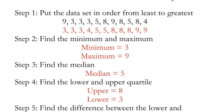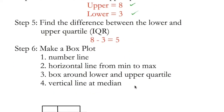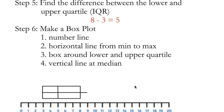Step one: hopefully you put the data set in order. We have 3, 3, 3, 4, 5, 5, 8, 8, 8, 9, 9 — there should be 11 numbers. Minimum and maximum: we have three and nine. The median is the one in the middle — it's five. Upper and lower quartiles are eight and three. The IQR is simply eight minus three, which is five — same as the median. And then we make a box plot. Your box plot should look something like this.